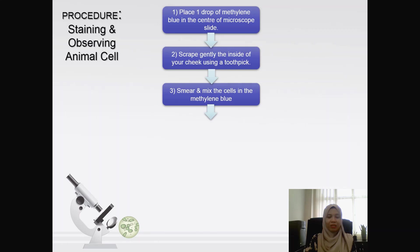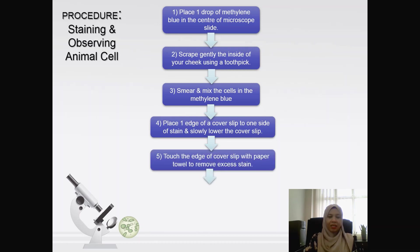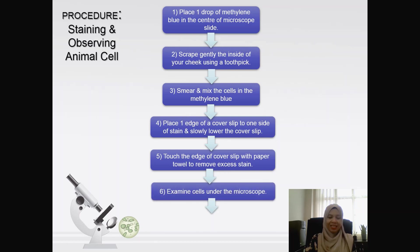Be very careful. Then smear and mix the cells in the methylene blue. Place one edge of a cover slip to one side of the stain and slowly lower the cover slip to cover the slide. If there is excess stain, touch the edge of the cover slip with a paper towel to remove it, then examine the cells under the microscope, draw and label them as your results.